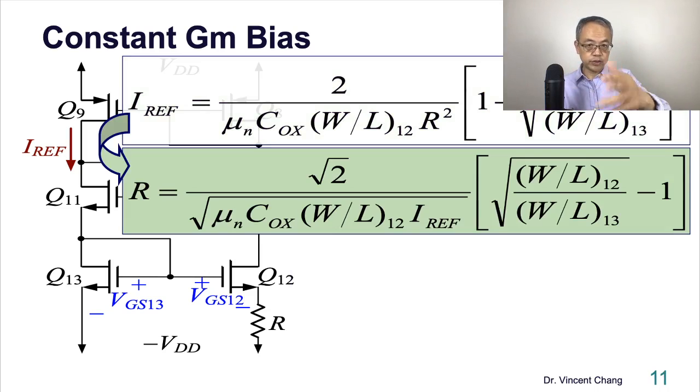Not only that. This is just the equation - we just replaced the R, just moved it around. In terms of R, if someone gives you the reference current or geometry ratio and all of the parameters, and asks you what kind of R can achieve this result - remember, the square root you have to flip. It becomes the square root of 12 on the top. Why? Because the W over L of Q12 will be greater than W over L of 13. Why? You see the circuit on the left.